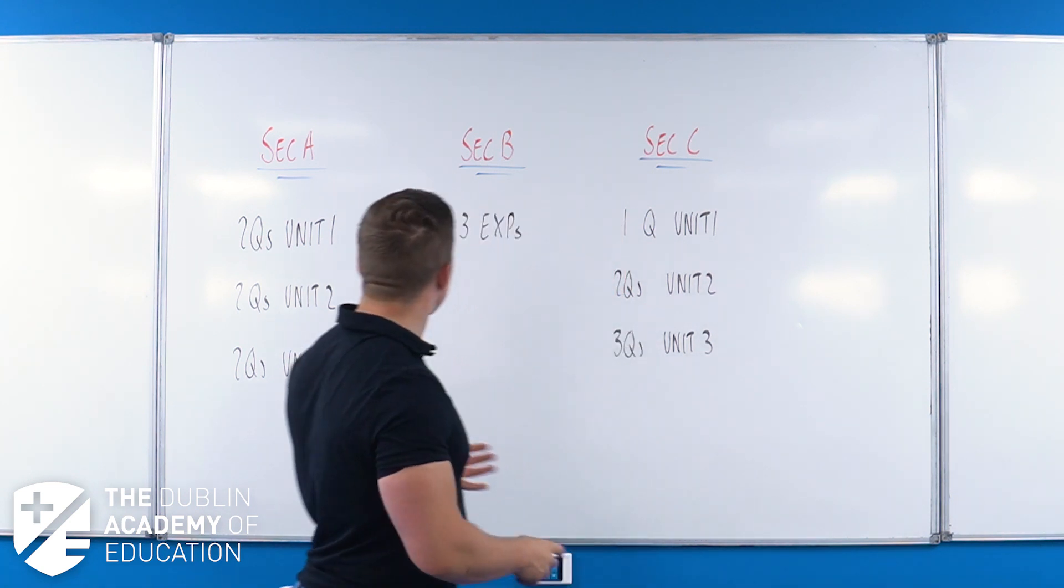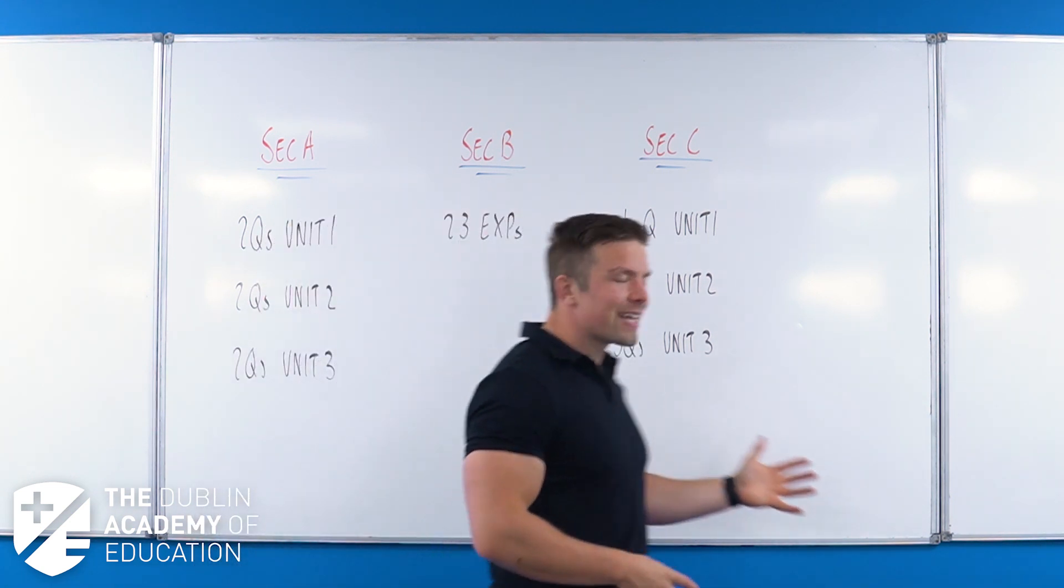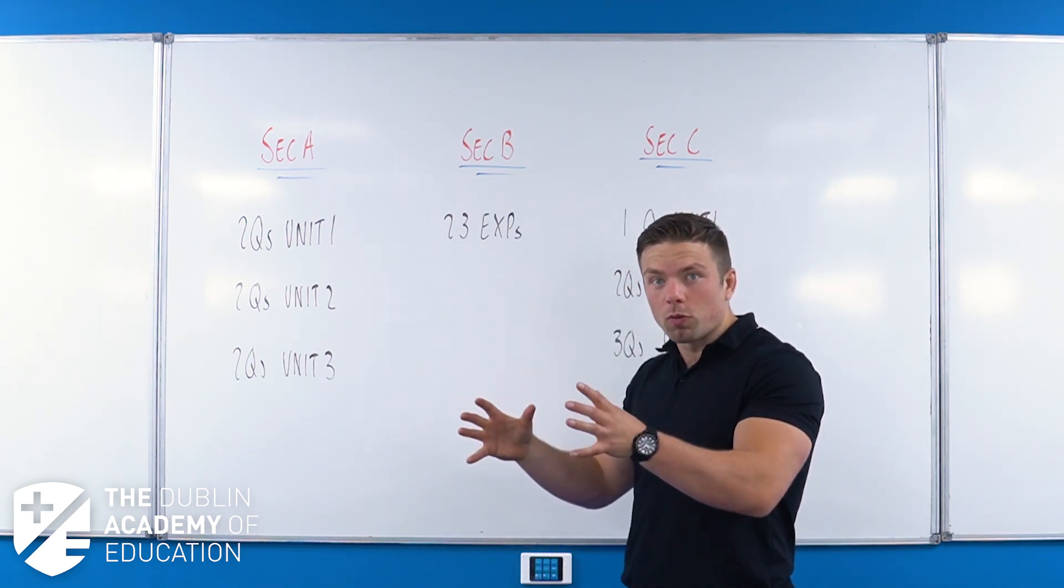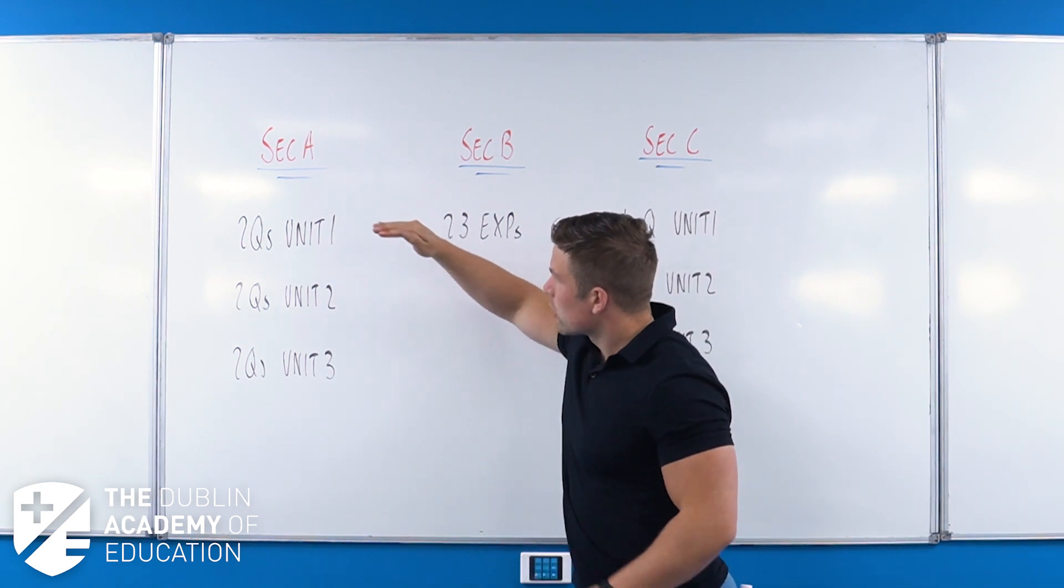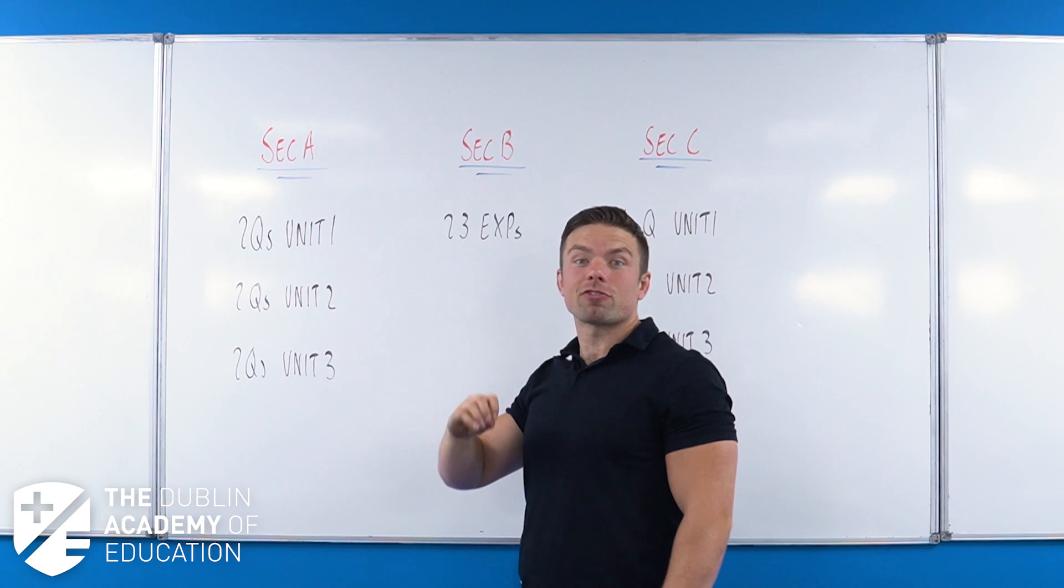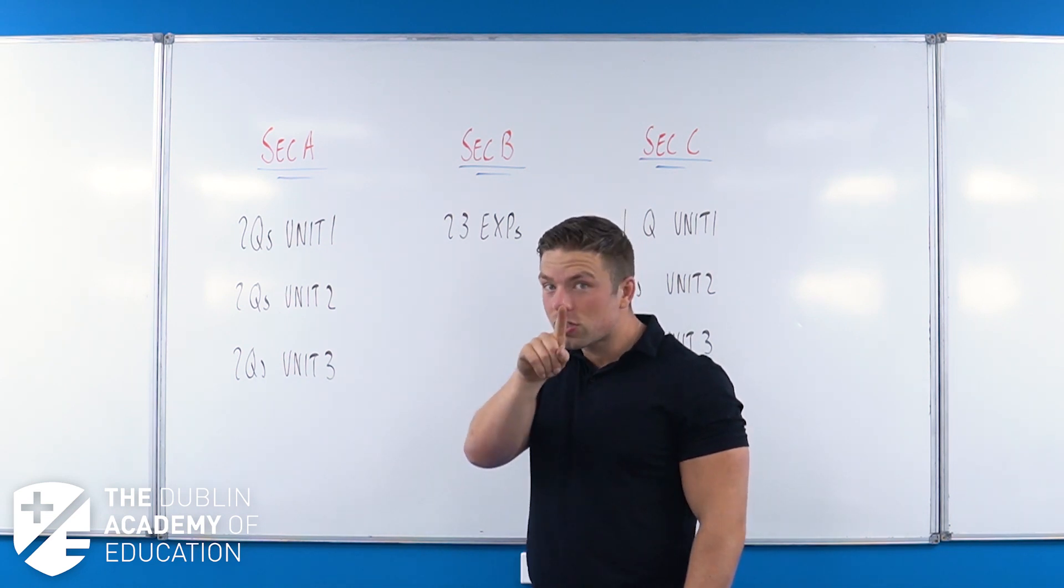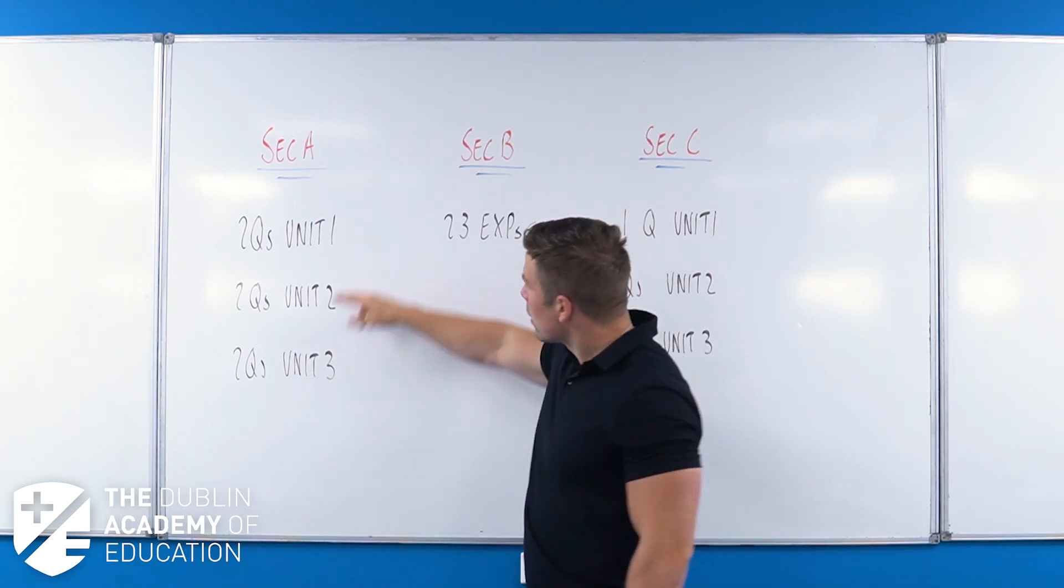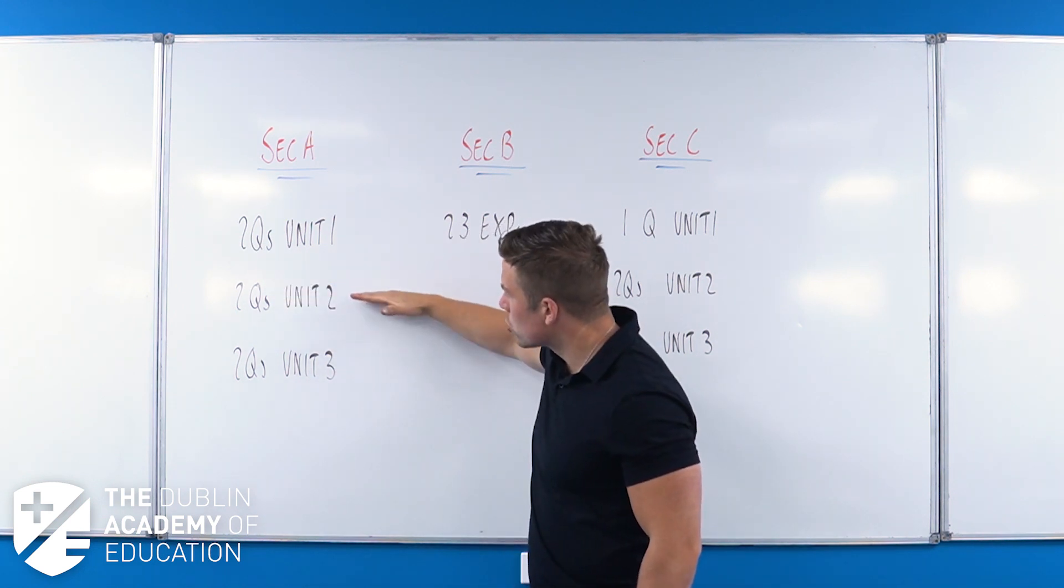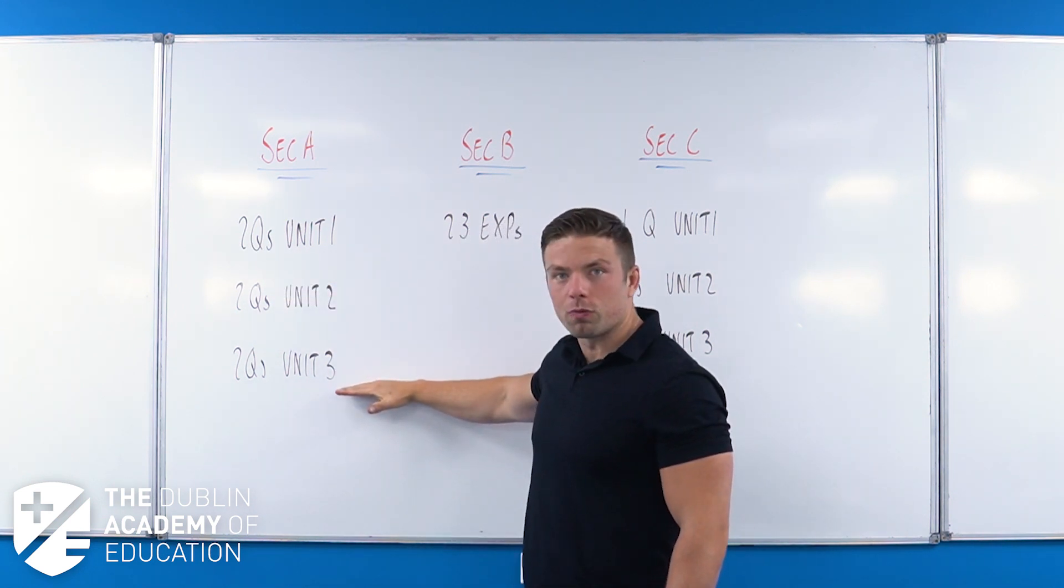Now, behind me on the board, you will see section A, B and C and you will see the questions that are in a normal year. This is how the Leaving Cert is broken up. We can see that in section A, we've got six questions and in a normal Leaving Cert year, you have to answer five. The more important thing is we've got two of these questions have to come from Unit 1, two have to come from Unit 2, two have to come from Unit 3.